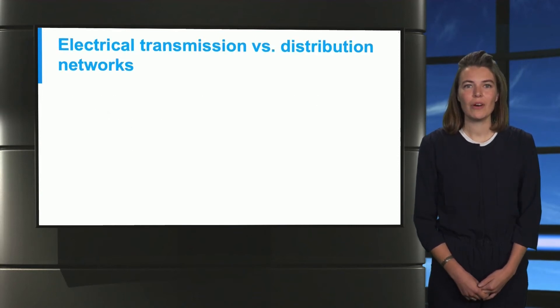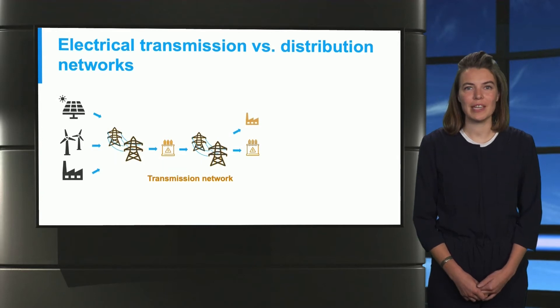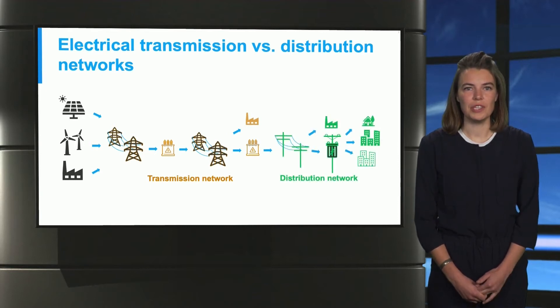There exist two types. On the one hand, we have the transmission network as you see here. You can see the big producers and the high voltage network that transport the electricity from these producers to cities or factories, and then it goes into the distribution network.